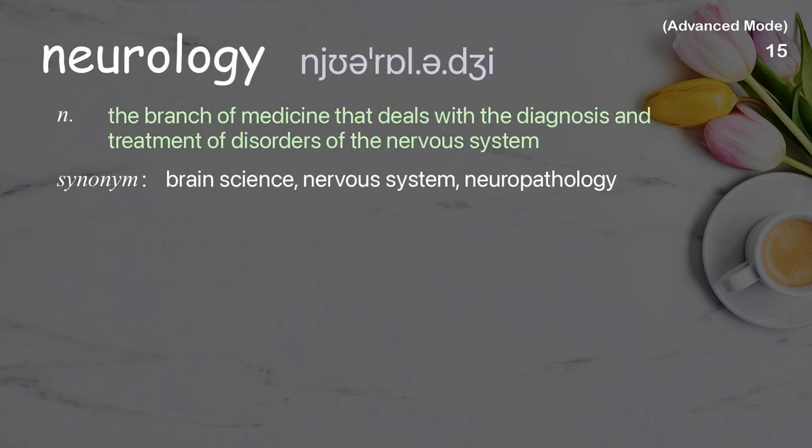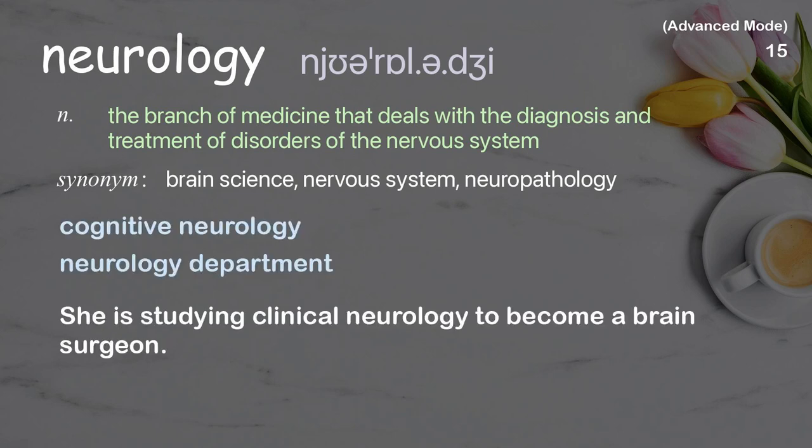Neurology: the branch of medicine that deals with the diagnosis and treatment of disorders of the nervous system. Examples: cognitive neurology, neurology department. She is studying clinical neurology to become a brain surgeon.